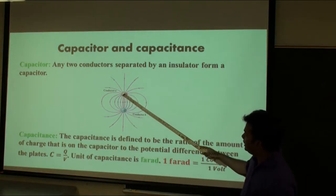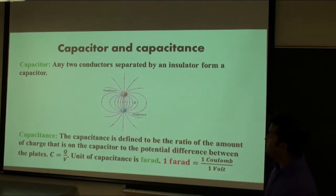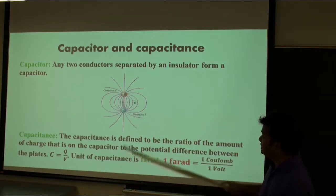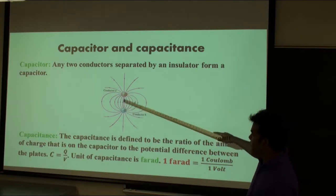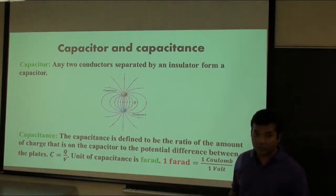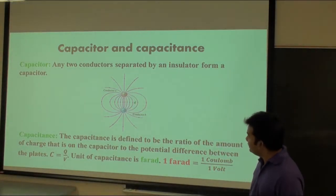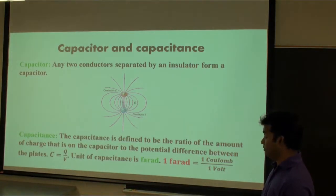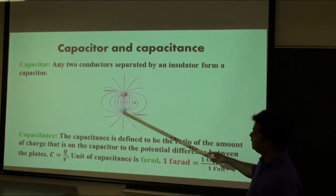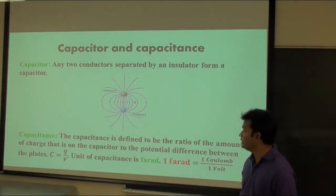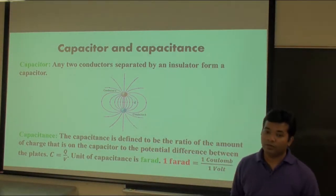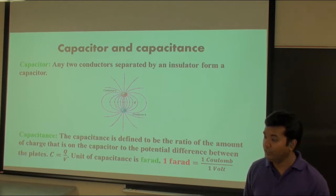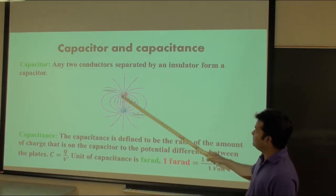The charge on conductor A is positive Q and charge on conductor B is negative Q. There is an electric field in between these two charges and the energy is stored in this field. The total charge of any capacitor is zero because we have positive charge and equal amount of negative charge. By means of charge in a capacitor, we mean the charge on each plate.